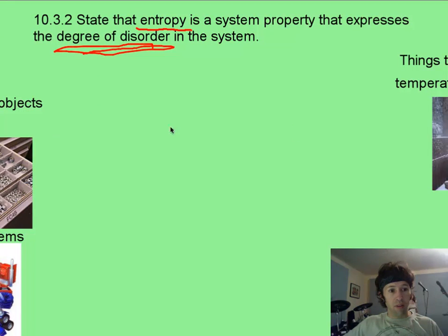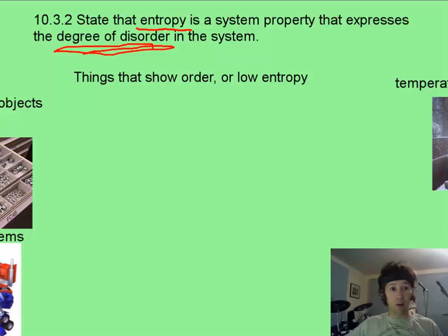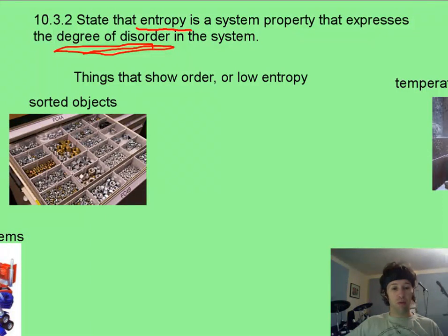Sometimes it's best to think what things have low entropy, or have high order. Whenever we see things that are sorted, like the robotics room at ISM, has low entropy on a normal day, because all of the different parts are sorted in their places where they are actually happiest.